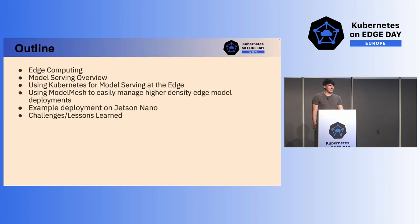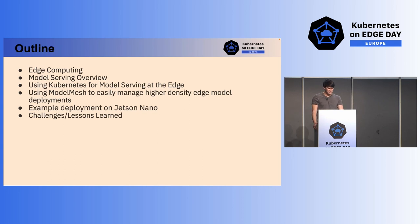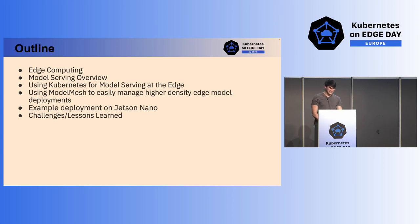To give an outline for the talk, we're going to first go over edge computing, then the model serving overview, then the notion of using Kubernetes for model serving at the Edge. Then we'll cover something called ModelMesh, which I will introduce to easily manage higher density edge model deployments on Kubernetes. And we'll go through an example deployment, some challenges encountered, and some lessons learned.